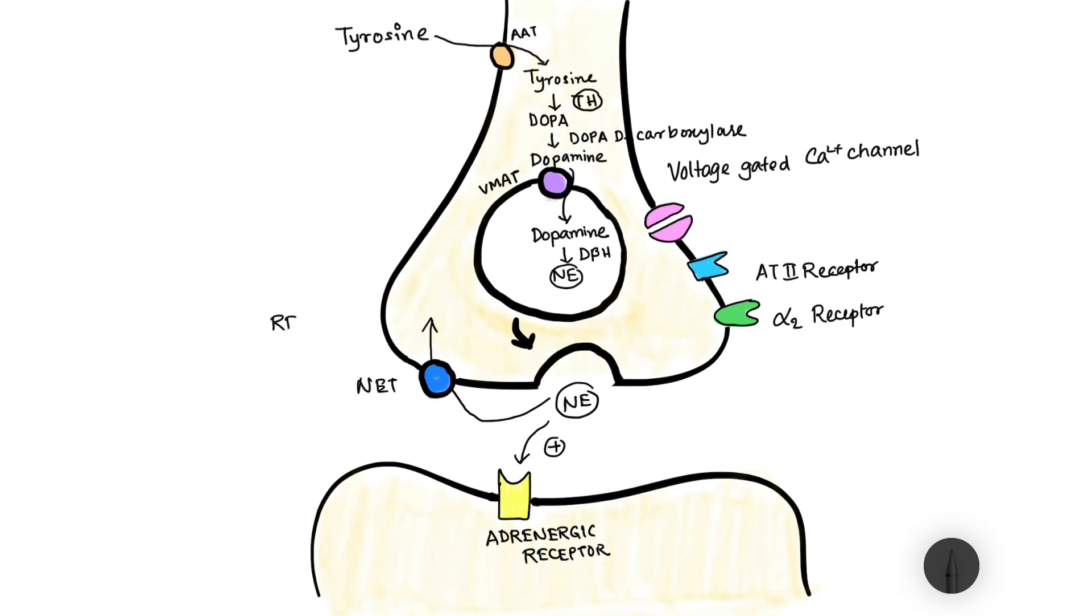This process is known as reuptake and is again stored into the vesicle via the VMAT.